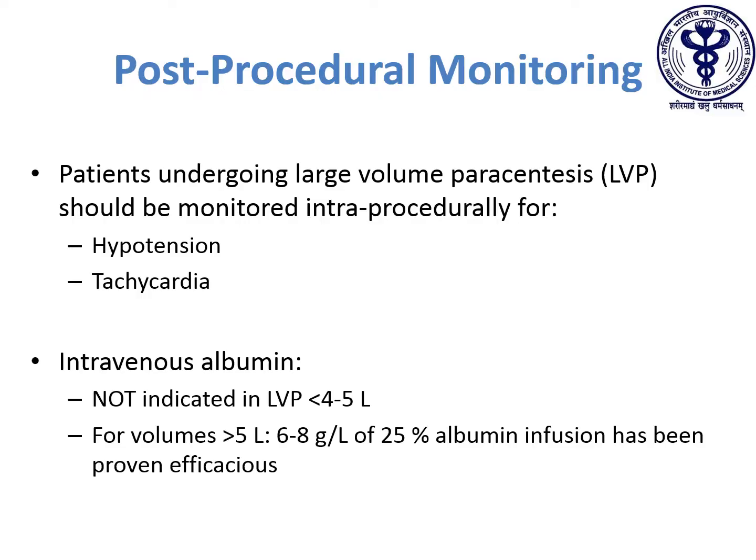Patients undergoing large volume paracentesis should be monitored intra-procedurally for hypotension and tachycardia. Intravenous albumin is not indicated in large volume paracentesis less than 4 to 5 liters. For volumes more than 5 liters, 6 to 8 grams per liter of 25% albumin infusion has been proven efficacious in preventing hepatorenal syndrome.